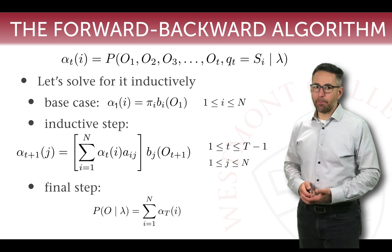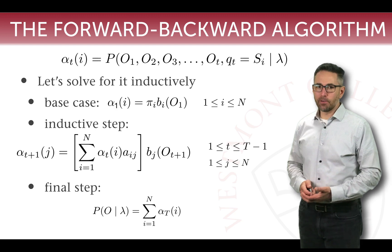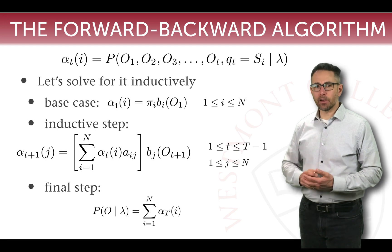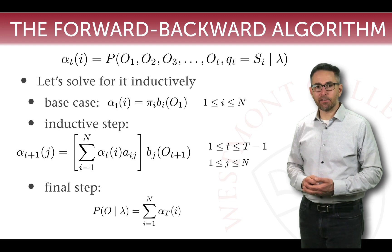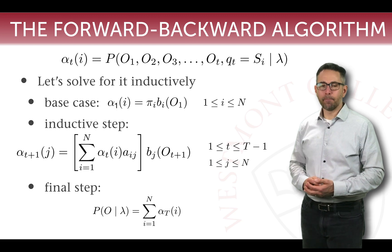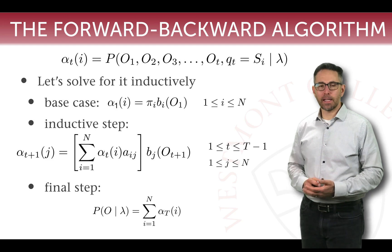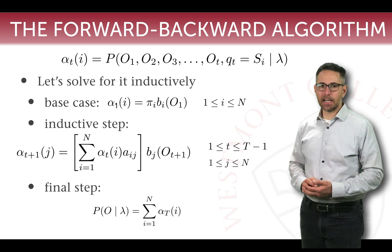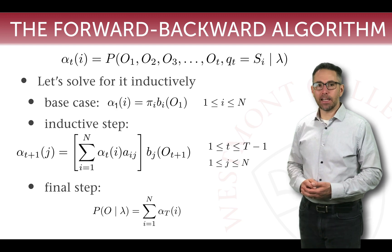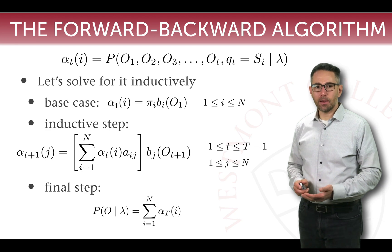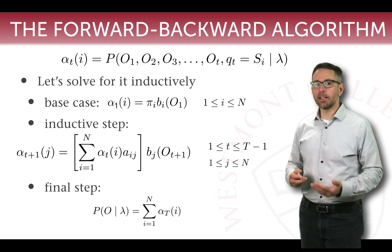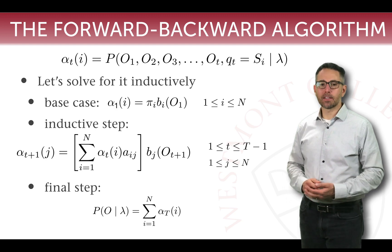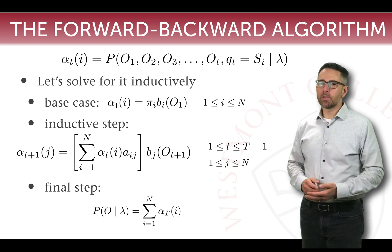For the final step, we take the alpha variables at the final time step capital T and sum over all the states we could have ended up in. Alpha_T(i) is the probability of o1 through o_T and ending up in state S_i. Once we've calculated all alpha T values using the inductive method, to get the overall probability P(O|lambda) we sum over all possible final states: the sum from i=1 to N of alpha_T(i). It's a really elegant equation.